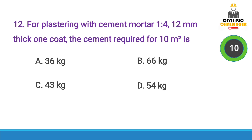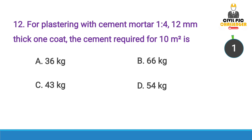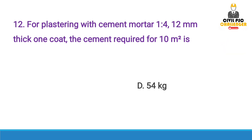Next question: For plastering with cement mortar 1:4, 12 mm thick, 1 coat — the cement required for 10 square meters is — Answer option D, 54 kg.